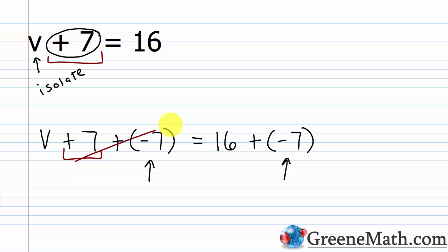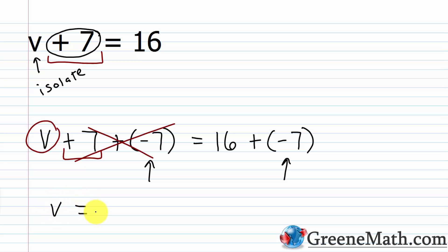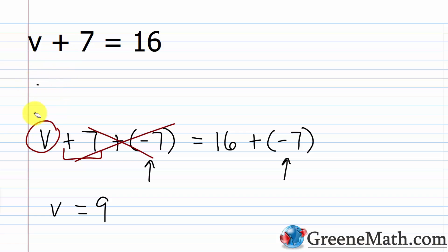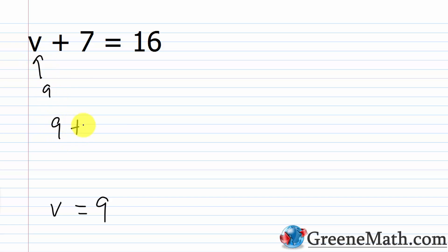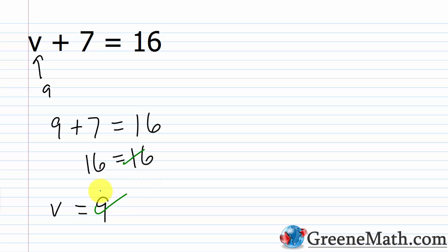7 plus negative 7 is 0, so that's gone and I'm just left with v on the left side. v equals 16 plus negative 7, which is 9. To check: plug in 9, so 9 plus 7 equals 16. Yes, 16 equals 16. So v equals 9 is the correct solution.